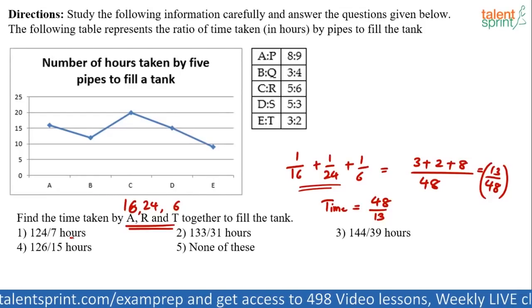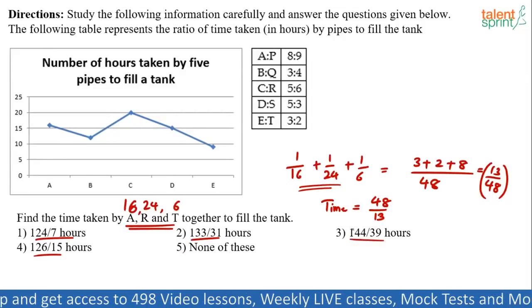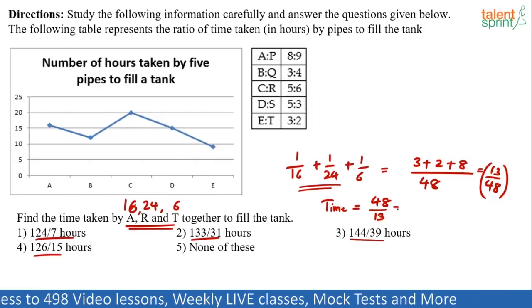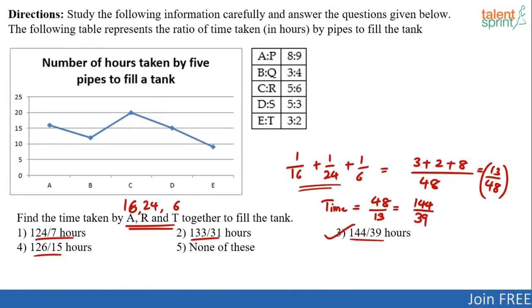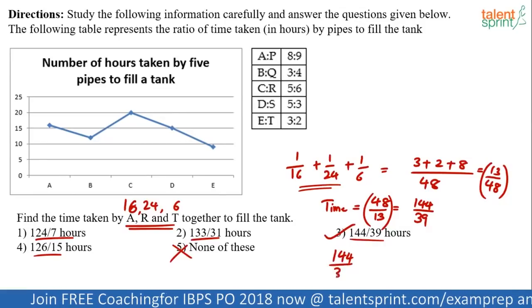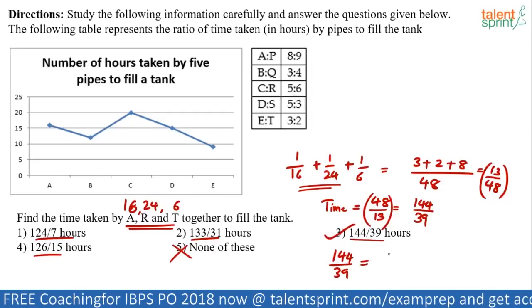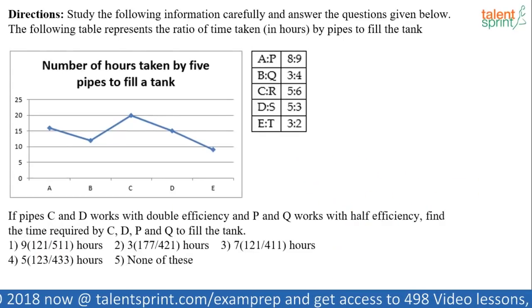Now, if you see, none of the options here are in the form of 48 by 13. Now, don't mark none of these as the answer immediately because I think 144 by 39 is nothing but 48 by 13. Multiply both numerator and denominator by 3 what happens? 48 into 3 is 144. 13 into 3 is 39. So, it's actually the answer is option 3. 144 by 39. You are getting it? Since you have got 48 by 13 in a hurry, don't mark fifth option none of these. Because nothing is 48 by 13 here. If you pay attention, 144 by 39 when you simplify further. See, 3 is the common multiple. So, this goes 48 times and this goes 13 times. This is actually 48 by 13. So, be careful.